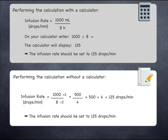The full working for the cancelling of units in these two examples on this page hasn't been shown. If you want to better understand how a unit of drops per minute is arrived at, please go back to the example on the first page.